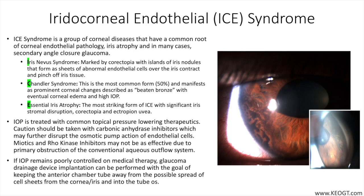The corneal endothelium has a beaten bronze appearance on slit lamp biomicroscopy and may mimic the appearance of Fuchs corneal endothelial dystrophy. This appearance has been linked to the replacement of normal corneal endothelial cells by cells with epithelium-like features that have lost hexagonality and appear to be migratory, with the ability to cross Schwalbe's line and spread over the trabecular meshwork and surface of the iris. These cells are not able to maintain the normal pumping mechanism provided by healthy corneal endothelial cells, which maintain corneal osmotic balance and clarity.